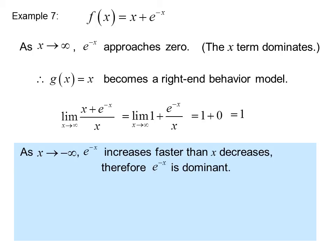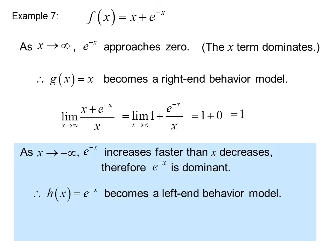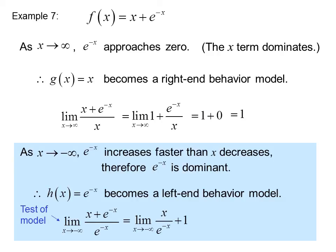As x approaches negative infinity, e to the negative x has a positive exponent, so e to the negative x increases faster than x decreases. Therefore, e to the negative x is dominant, and h of x equals e to the negative x becomes the left-hand behavior model. We can test it by taking the limit as x goes to negative infinity of (x plus e to the negative x) over e to the negative x, which equals the limit of x over e to the negative x plus 1, or 0 plus 1. The first term goes to 0 because the denominator grows very large very fast. So our model is correct.